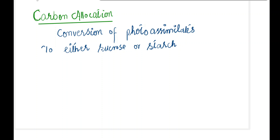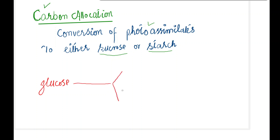This is the definition called carbon allocation. What is the meaning of carbon allocation? It is a conversion of photo-assimilates to either sucrose or starch. During photosynthesis, glucose is made, and that can be converted into sucrose or into starch. This is called carbon allocation. Sucrose is a form of carbon, and starch is also a form of carbon.